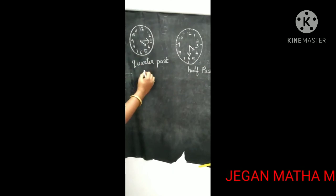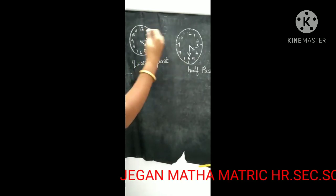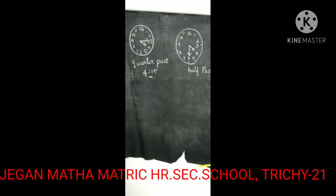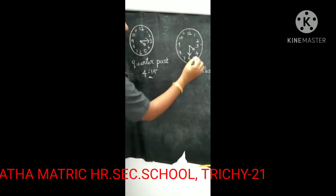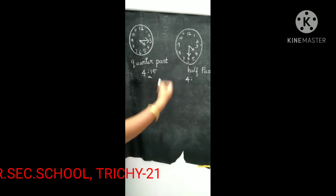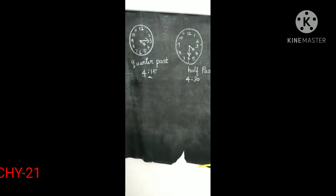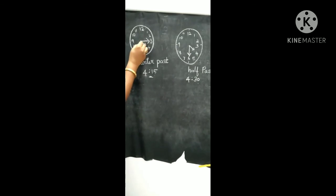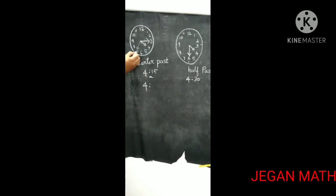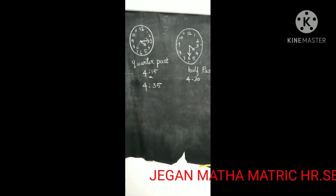The time written as 4 o'clock. And here the minute hand is on 3, so 3 multiplied by 5 — 3 fives are 15. So, 15 minutes. Written as 4 hours and 15 minutes. The hour hand is on 4, so 4 hours. And the minute hand is on 6, so 6 multiplied by 5 — 6 fives are 30. So 4 hours and 30 minutes. In case the minute hand is on 7 — 7 multiplied by 5, 7 fives are 35. So, 35 minutes — 4 hours and 35 minutes.